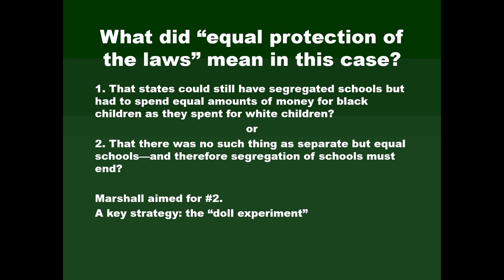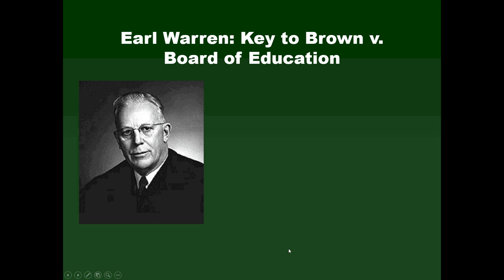One of the key strategies was what was called the doll experiment. Young Black children were presented with pairs of dolls — one white, one Black — by a social psychologist named Kenneth Clark. The evidence showed overwhelmingly that they thought the white doll was the better one, the prettier one, the superior one. Marshall argued that the self-image of Black children was being irreparably damaged by school segregation, and therefore there was no such thing as separate but equal schools — they could not be equal if they were separate.